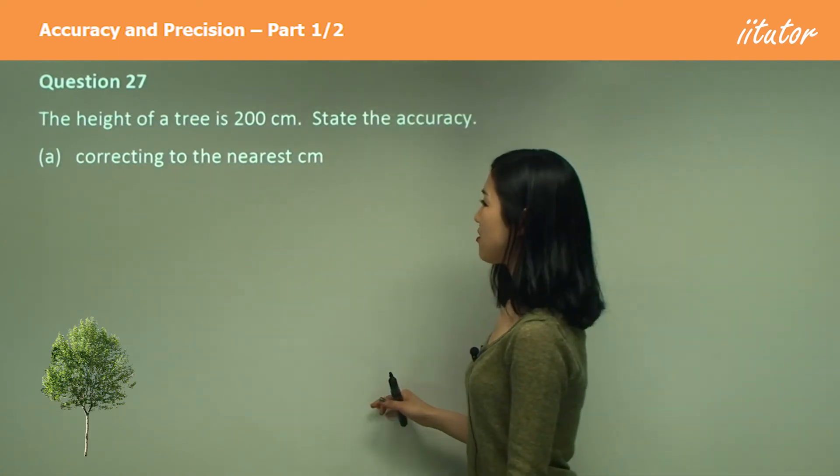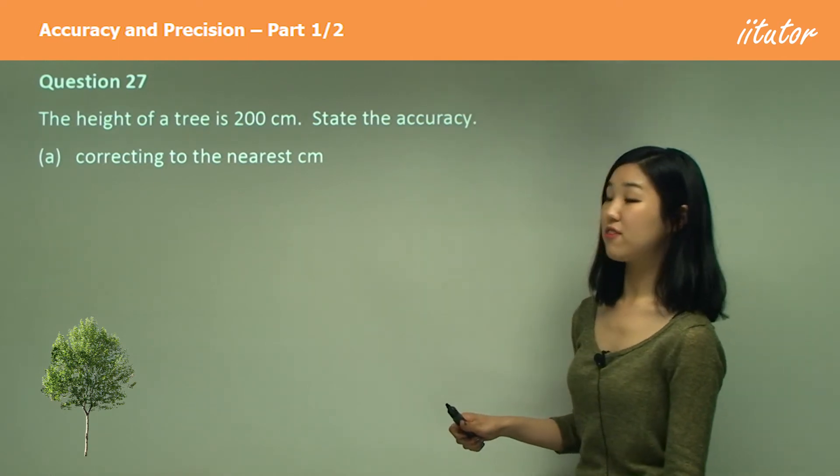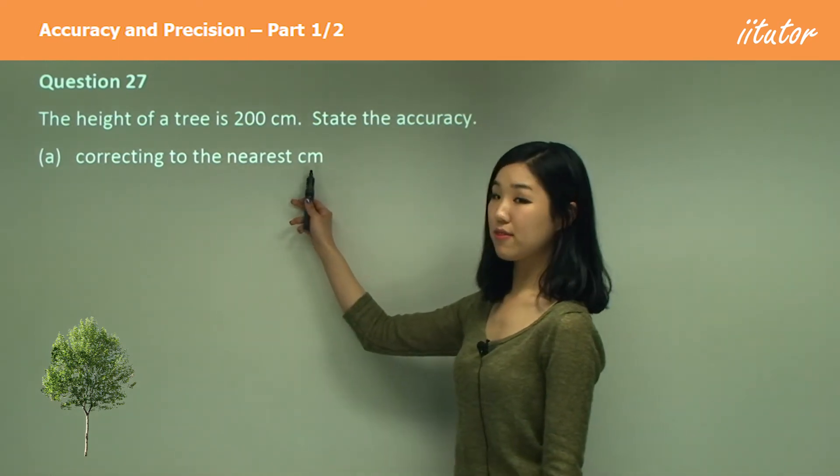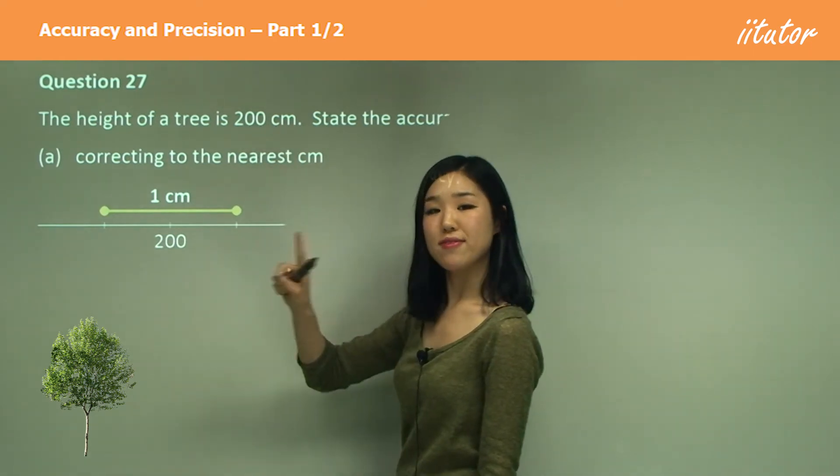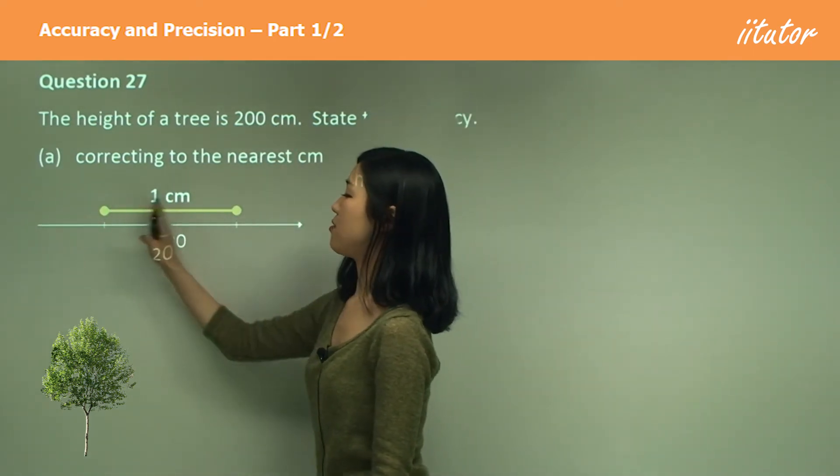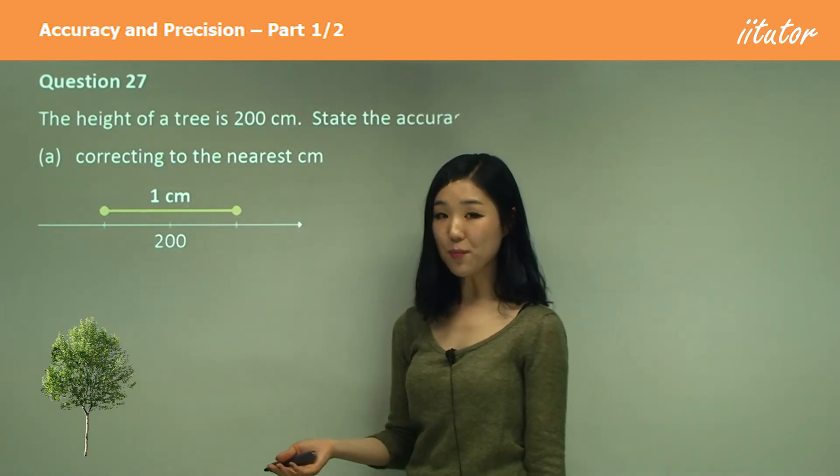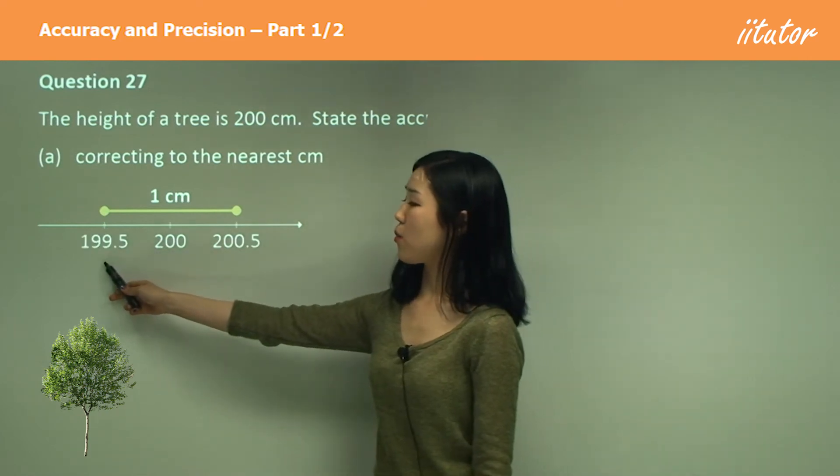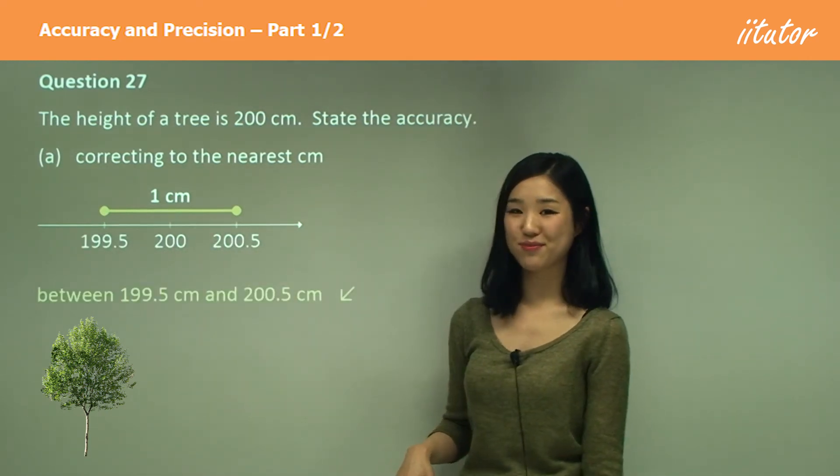The height of a tree is 200 centimeters. State the accuracy. So if the height of the tree is 200 centimeters and we want it to the nearest centimeter, it's simply going to be, because it's to the nearest one centimeter, we're going to have this gap as one centimeter. So what's half of a centimeter? 0.5. So we subtract 0.5 and add 0.5. So those are the accuracy levels.